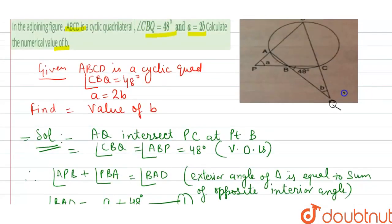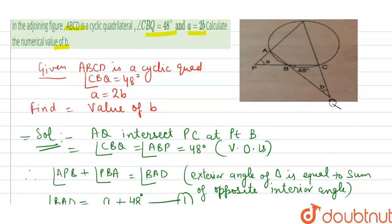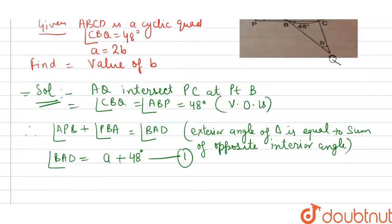Then, similarly, angle DCB. Similarly, angle DCB is equal to angle CQB plus angle CBQ.